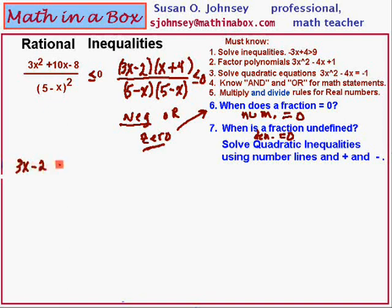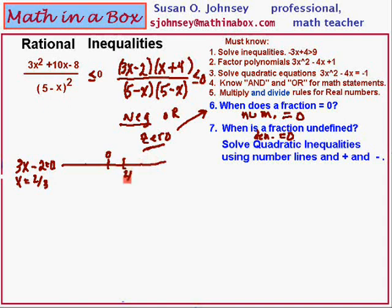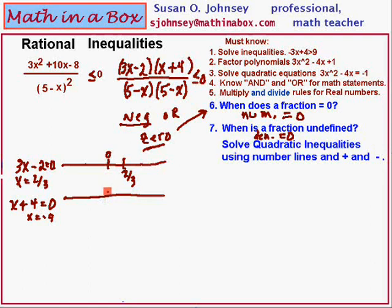Let's take the factor 3x minus 2. Draw a number line for it. On each number line you want to note where this factor will equal zero. Where does 3x minus 2 equal zero? It equals zero if x is two-thirds. I'm going to mark zero on my number line so I know exactly where zero is. Two-thirds is a positive number, to the right of zero, so I'll mark two-thirds over to the right. Our next factor is x plus 4. x plus 4 equals zero if x is negative 4. So our number line for x plus 4 has negative 4 marked to the left of zero.